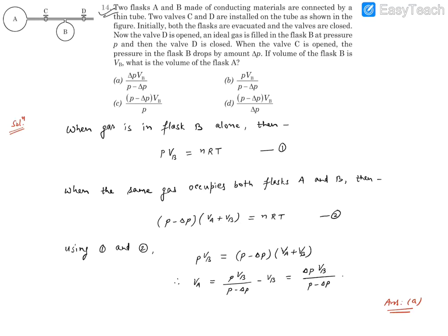Question number 14 reads that two flasks A and B are made of conducting materials and they're connected via a thin tube. Two valves C and D are installed on the tube as shown in the figure. This is flask A, this is flask B, this is valve C, this is valve D, and this is the tube.